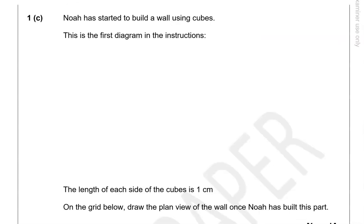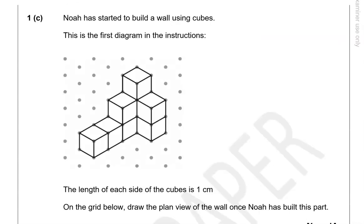Noah has started to build a wall using cubes. This is the first diagram in the instructions. The length of each side of the cubes is 1 cm. On the grid below, draw the plan view of the wall. Once Noah has built this part, this means looking at this from the top. So from the top we'll be able to see this, this, this, this and this.